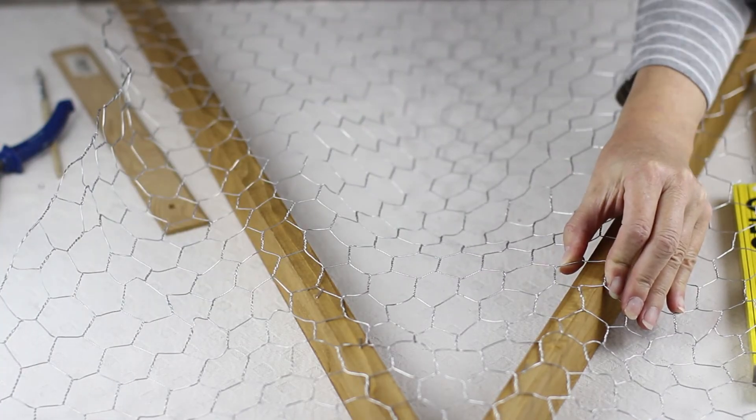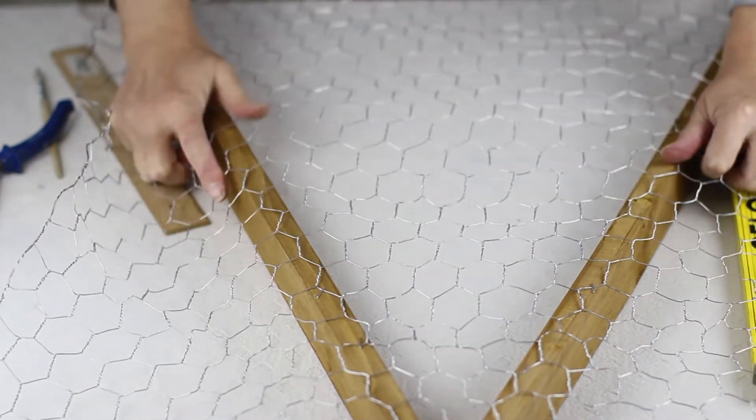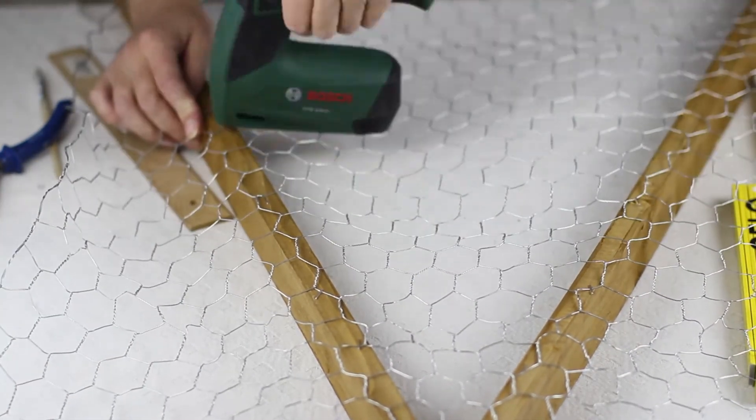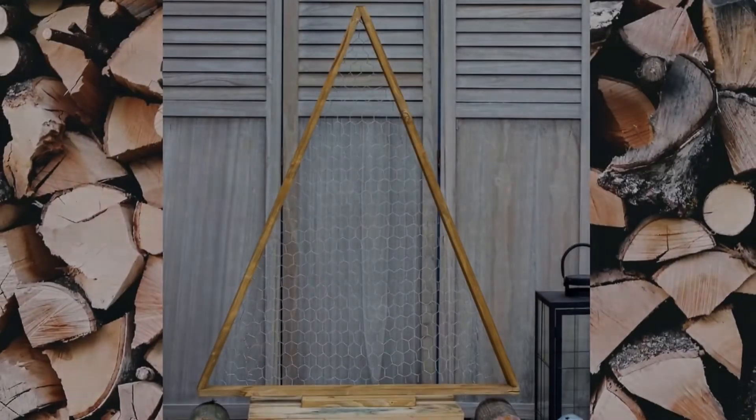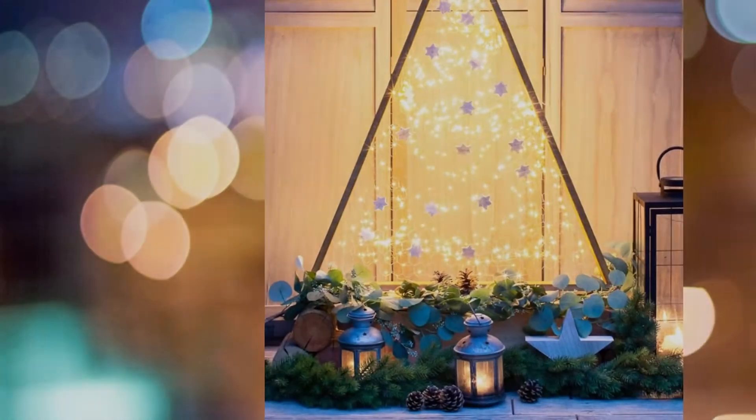And to finish off I added some fountain string lights and a star garland and take a look at the blog post for some tips on how I attached those. And that's it. The wooden triangle Christmas tree is finished and this is how it looked before I added the lights and the star garland.